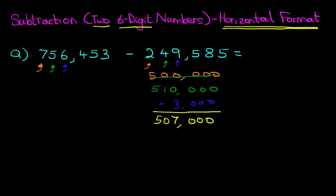Now we keep going. How about the hundreds? We've got 4 minus 5. 4 minus 5 is minus 1. So we've now got minus 100. I'll just change colors for this again. We'll do this in yellow. So 507,000 minus 100. You should know this. It's 506,900.